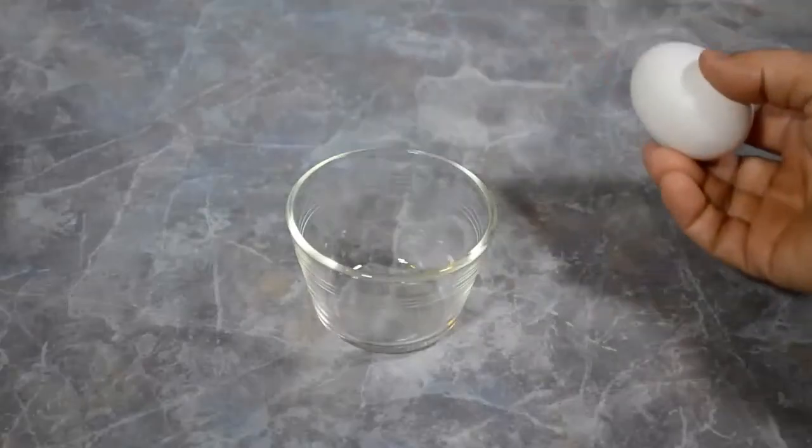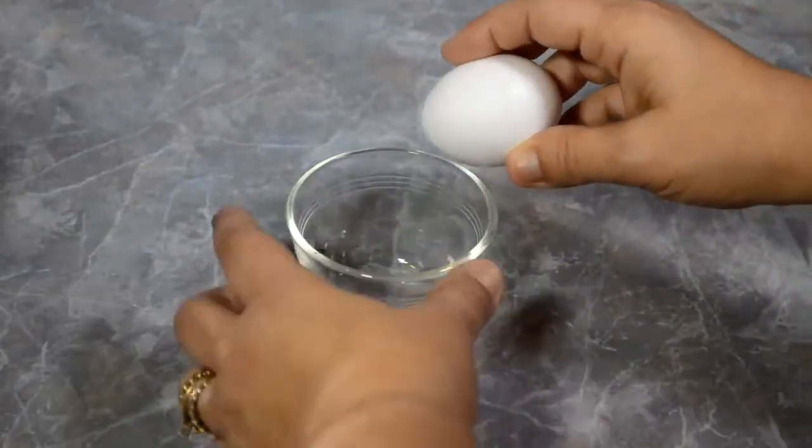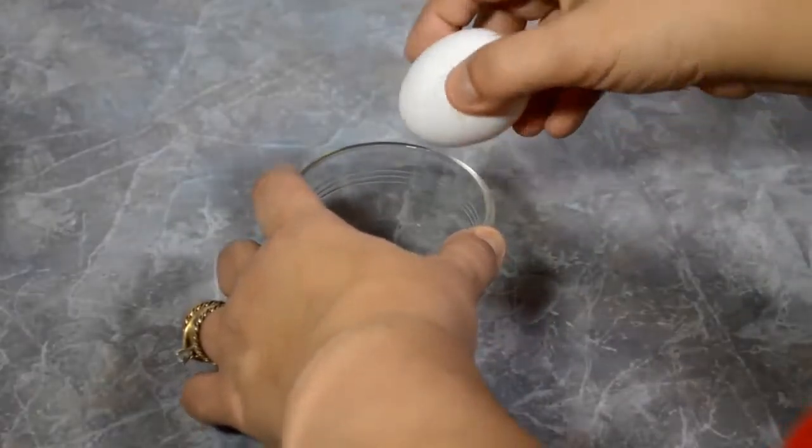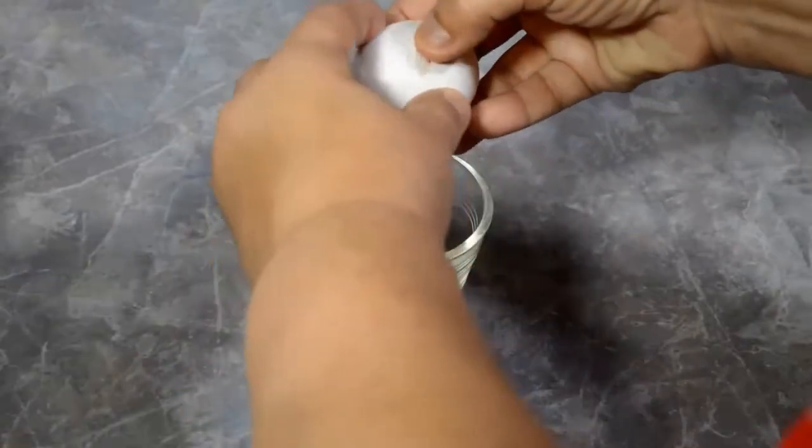Alright, what we're going to do is we're going to start by separating an egg, which is where we're going to take the yolk away from the white.